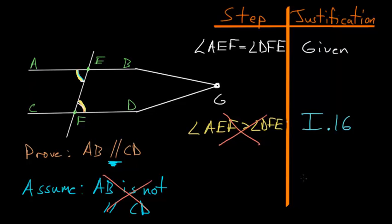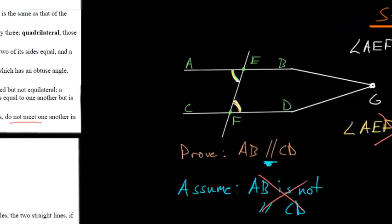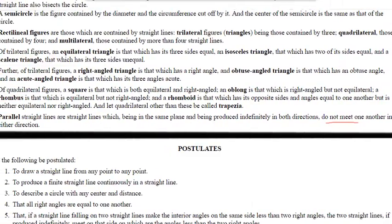And if we look at definition number 23 of Euclid's 23 definitions, we have that parallel straight lines are straight lines which, being in the same plane and being produced indefinitely in both directions, do not meet one another in either direction.